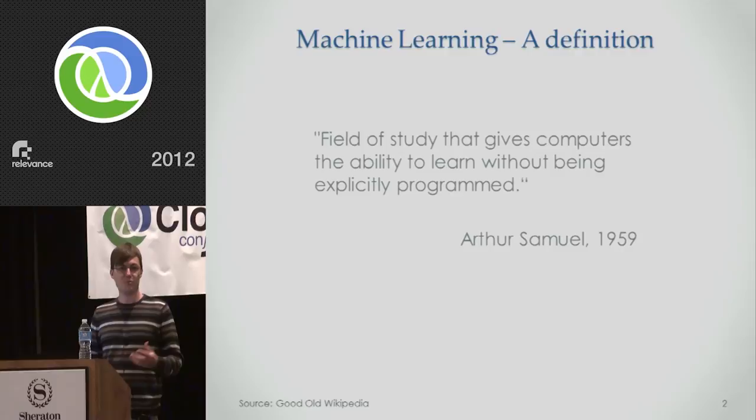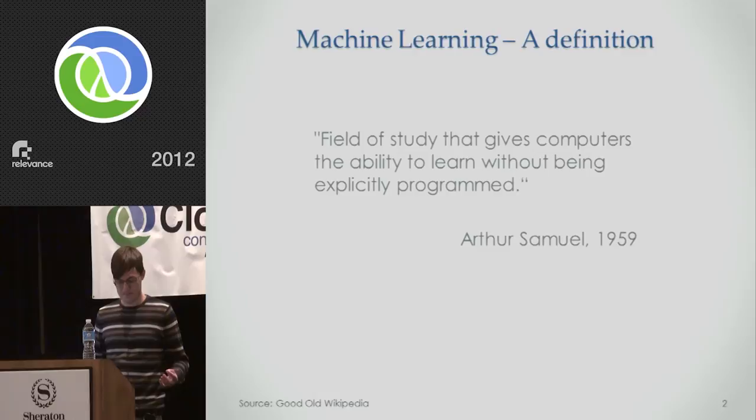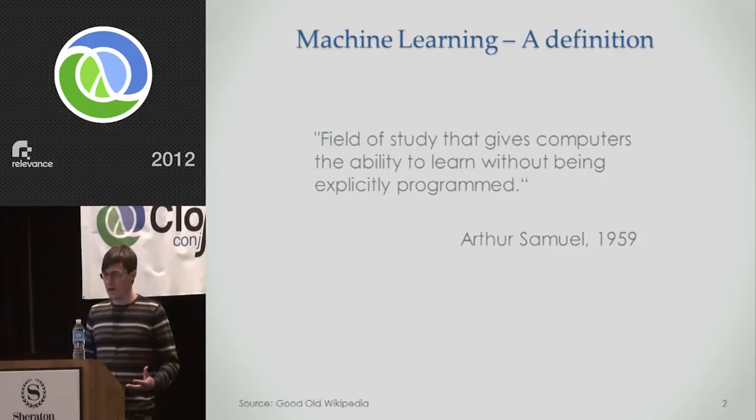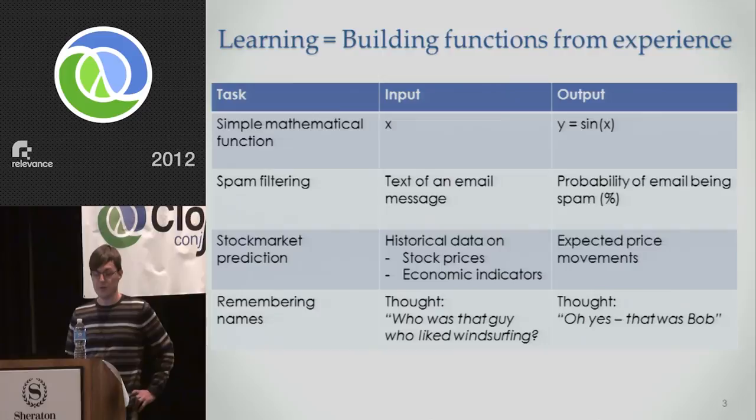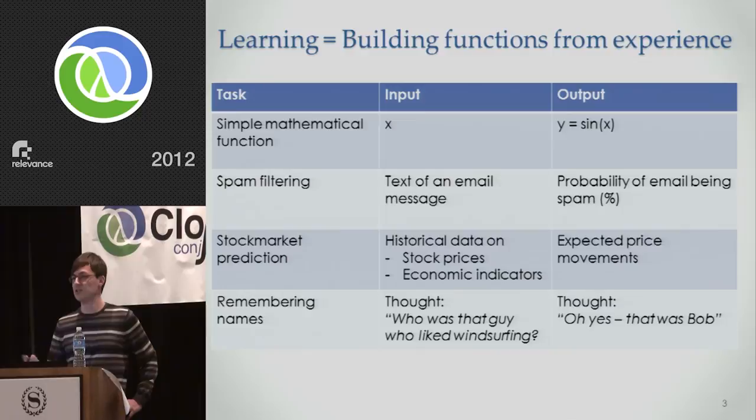Maybe you meet someone at a tech conference, you remember their name. Et voila! You've just learned something. And it's helpful to think about what that actually means. I find it helpful to think about learning in a very specific way. Learning means building functions from experience. Every machine learning problem can ultimately be conceptualized as a function mapping some kind of input to some kind of output.